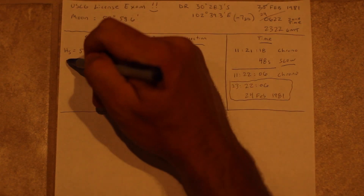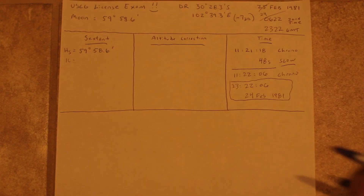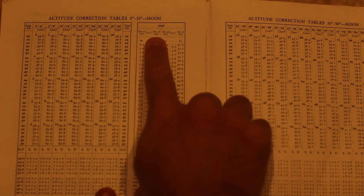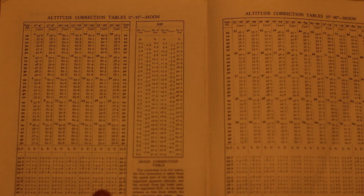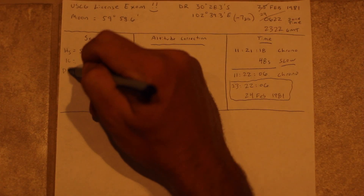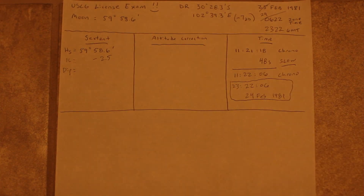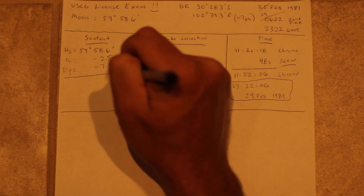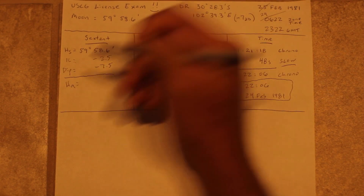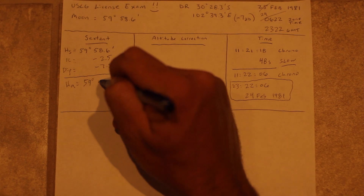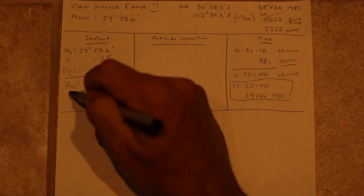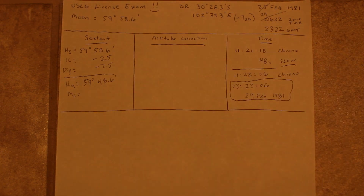We'll correct for index correction, and then in the back of the book there's a repeat of the dip tables for the moon — they're identical, but it's placed there for ease of use. Once we have an apparent altitude, we need to get into our apparent altitude correction, which is a little bit more complex, so we'll set up a whole column for this.